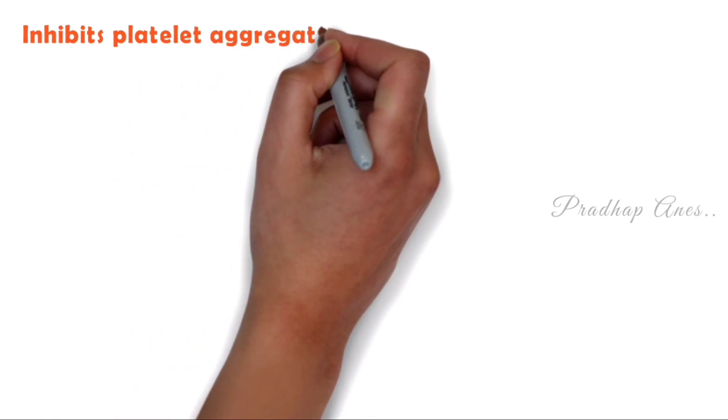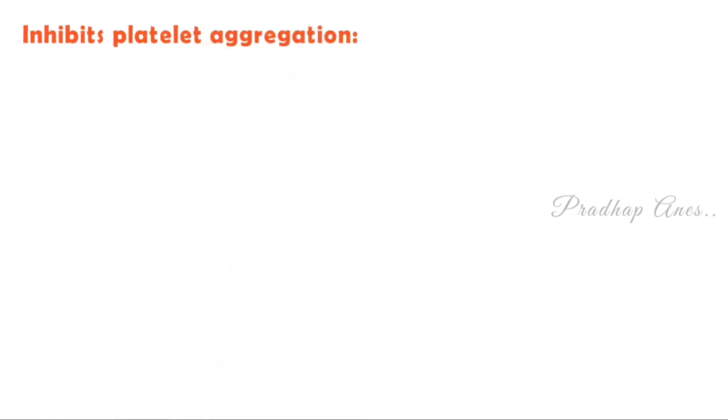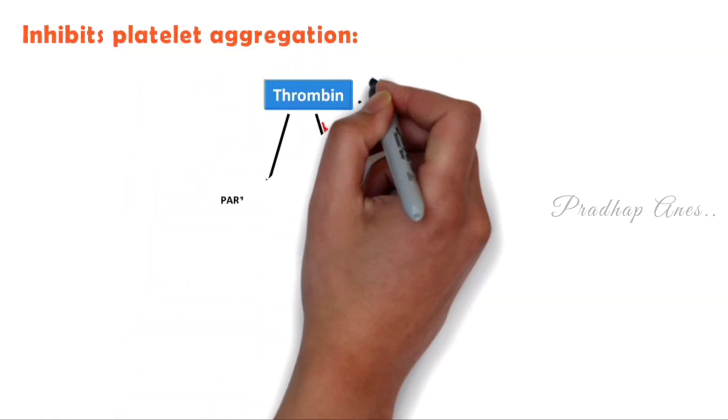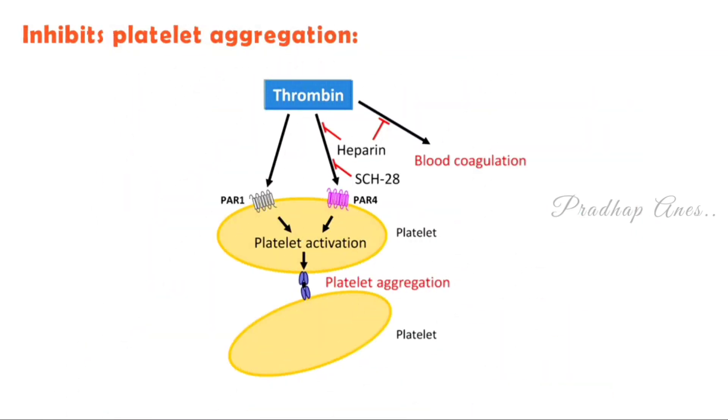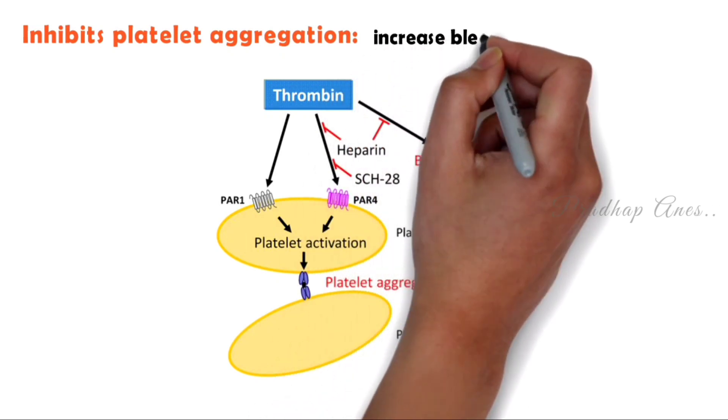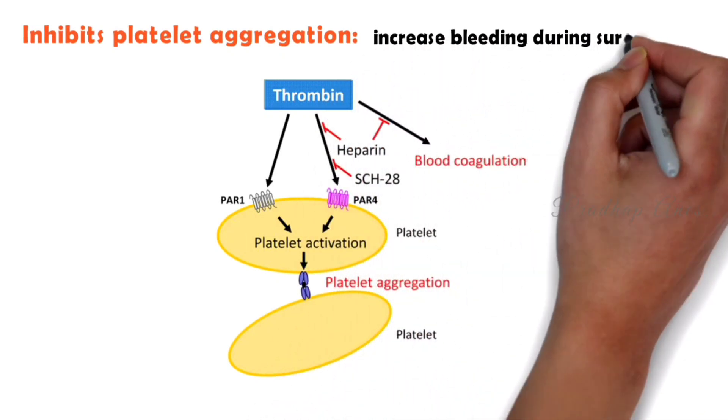Etomidate inhibits platelet aggregation, which is important for making a clot. So this can increase bleeding during surgery.